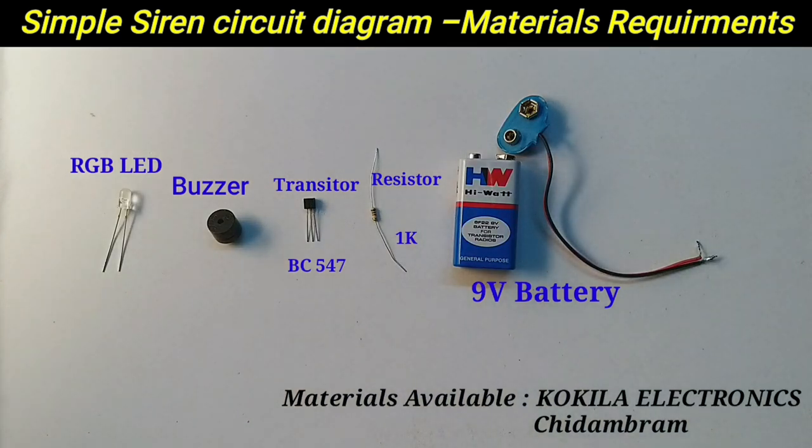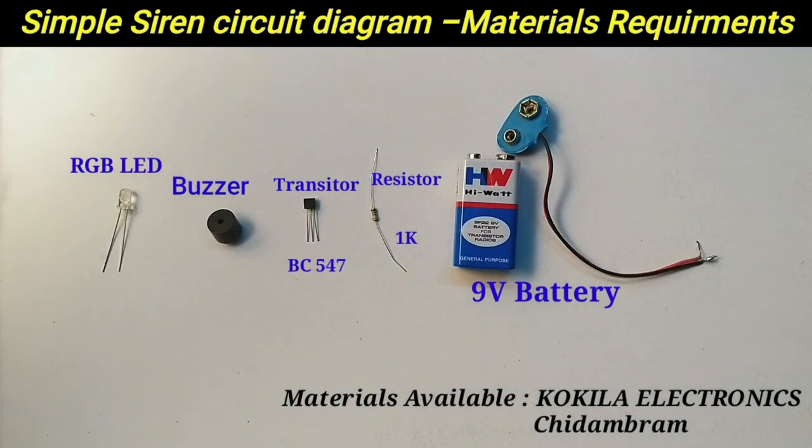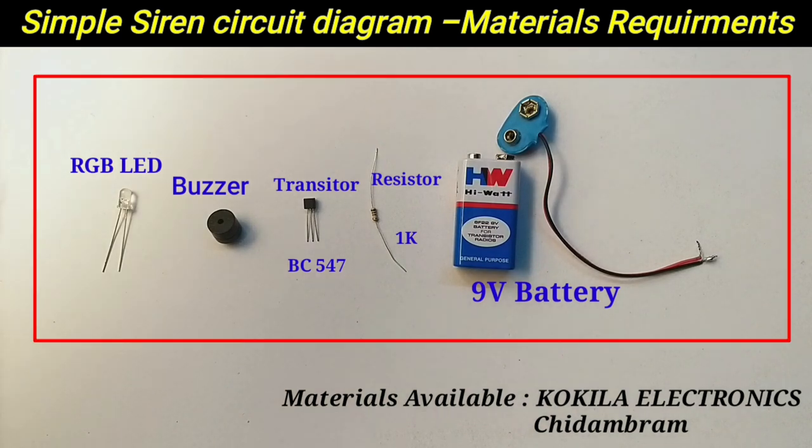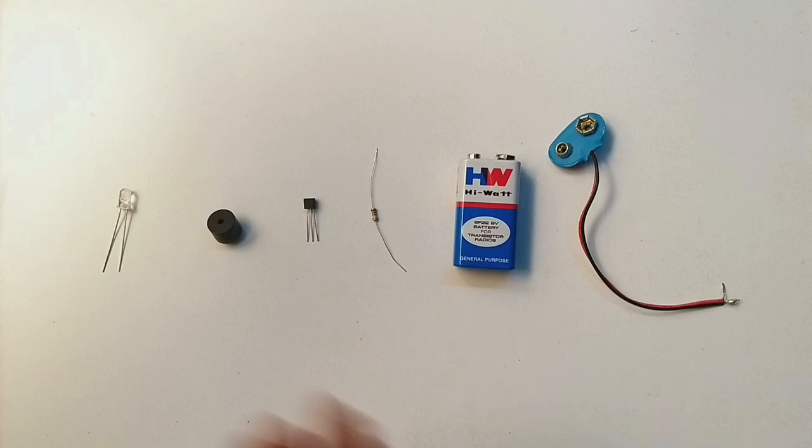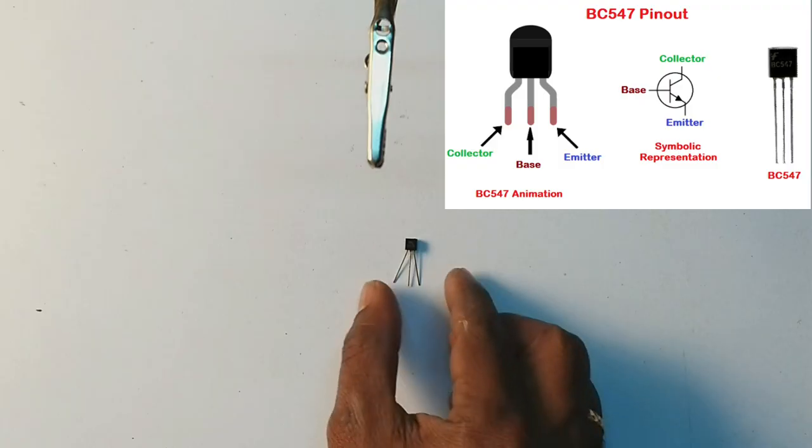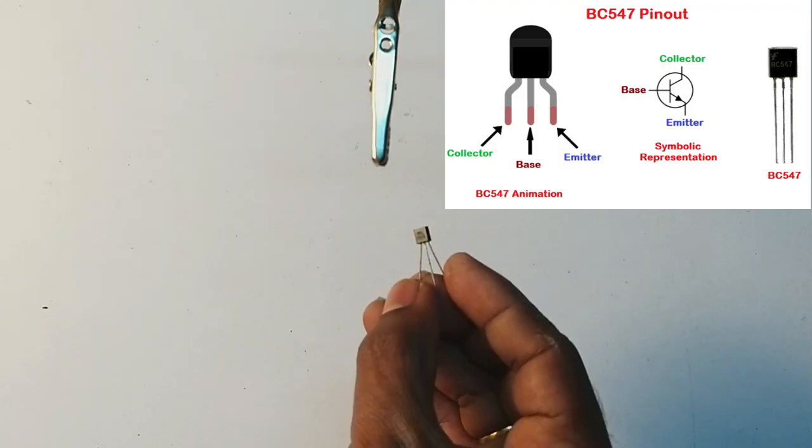In this circuit, we need an RGB LED unit, a buzzer, a transistor, a resistor, and a battery. You can see the circuit diagram here. I'll show you how to make it. The circuit diagram will make it easy for you to understand and build.